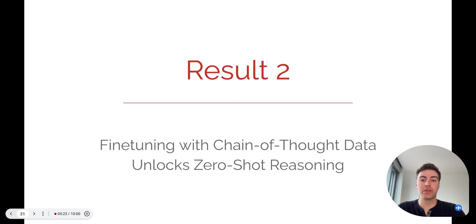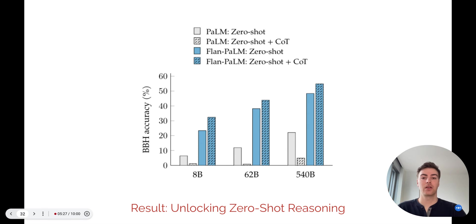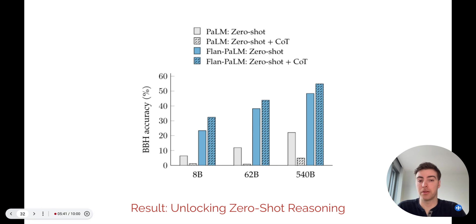Next, we test the benefits of fine-tuning with chain-of-thought data. As shown here by the gray bars, chain-of-thought prompting doesn't help PaLM's performance on these challenging Big Bench reasoning tasks. But by fine-tuning with chain-of-thought patterns, shown by the blue bars, the model achieves new best performances on these unseen tasks, because it is capable of using chain-of-thought more effectively at inference time.